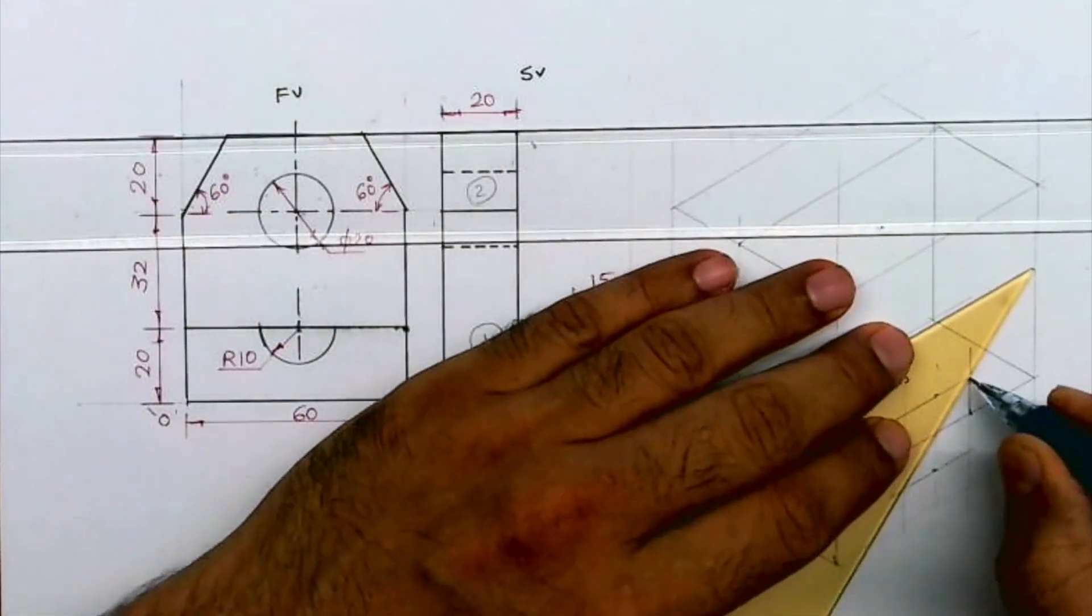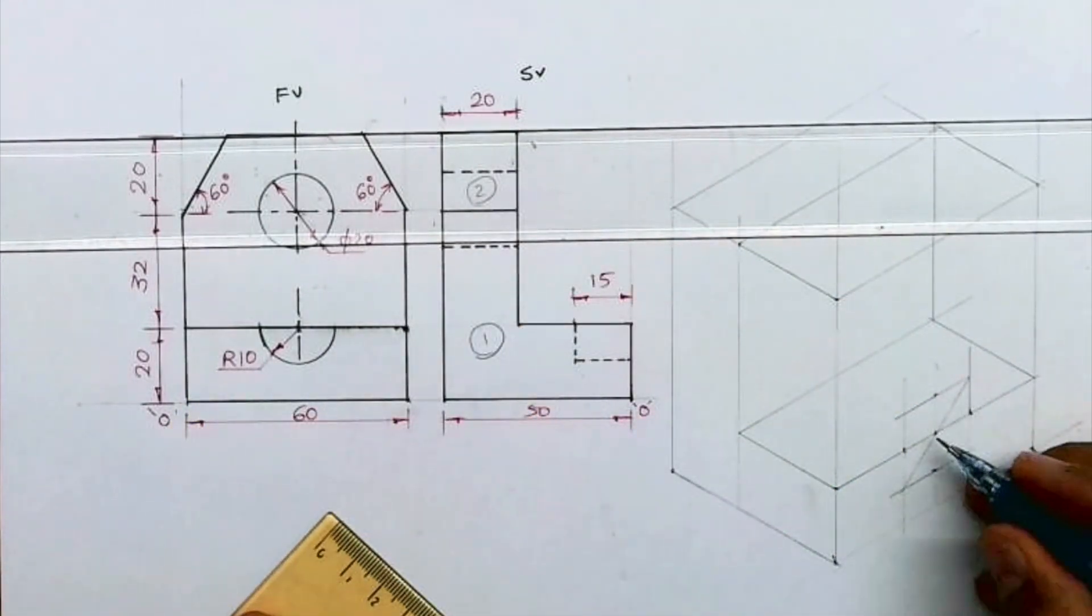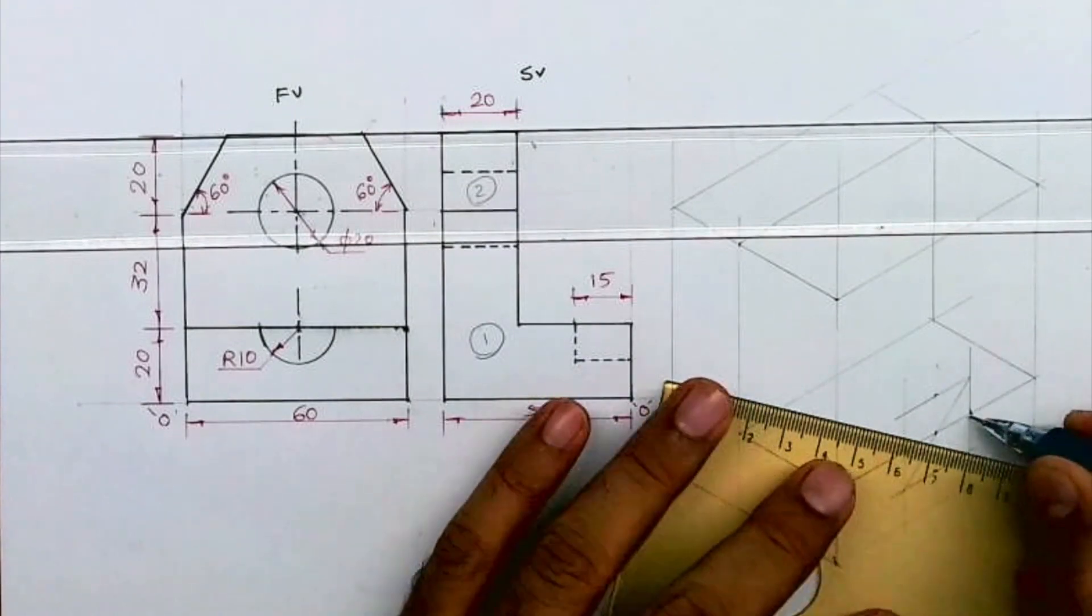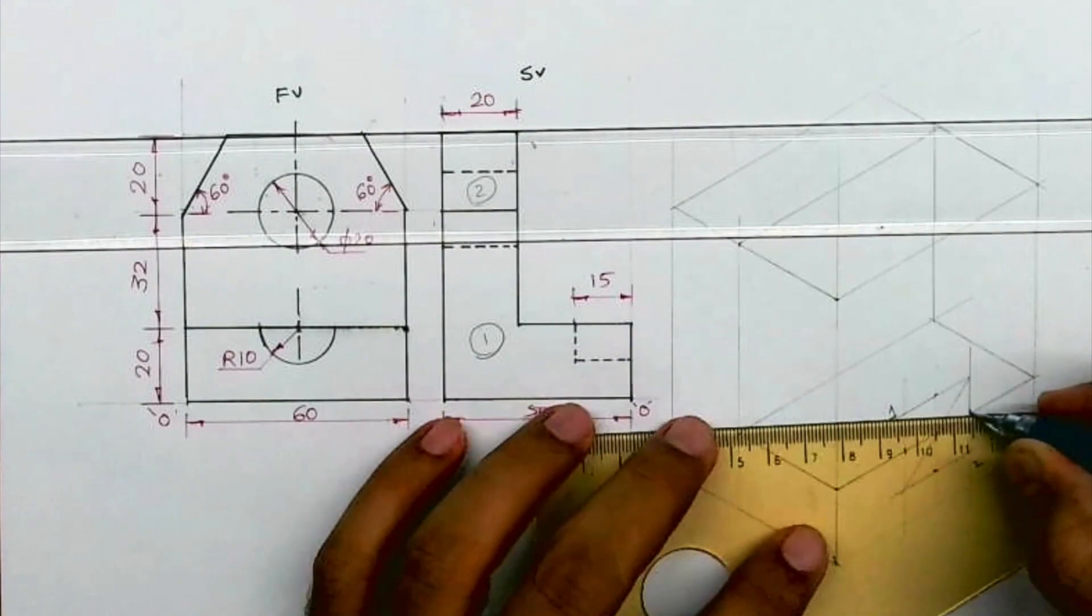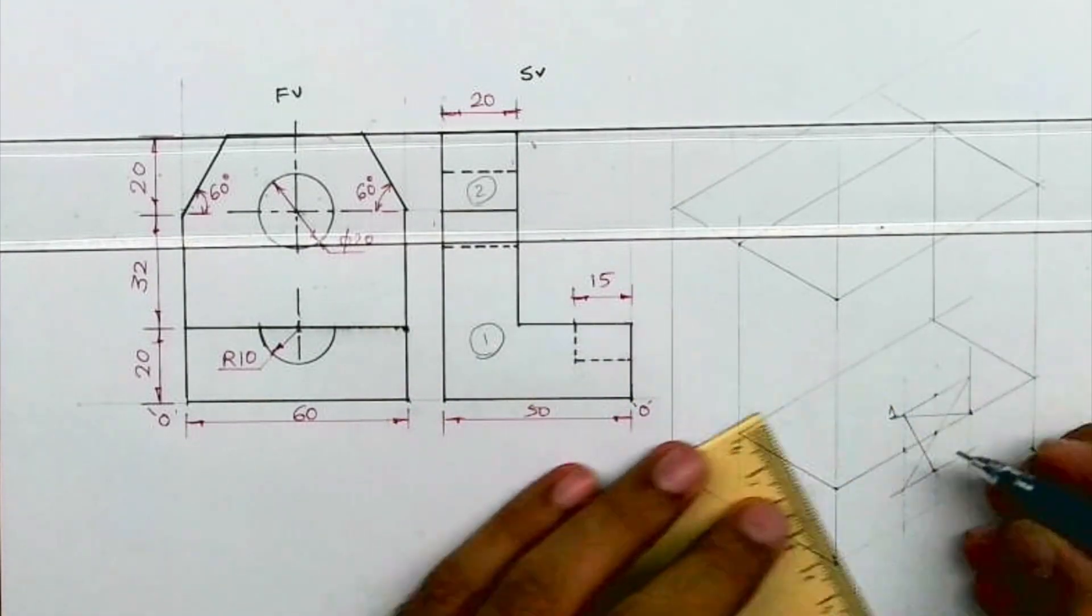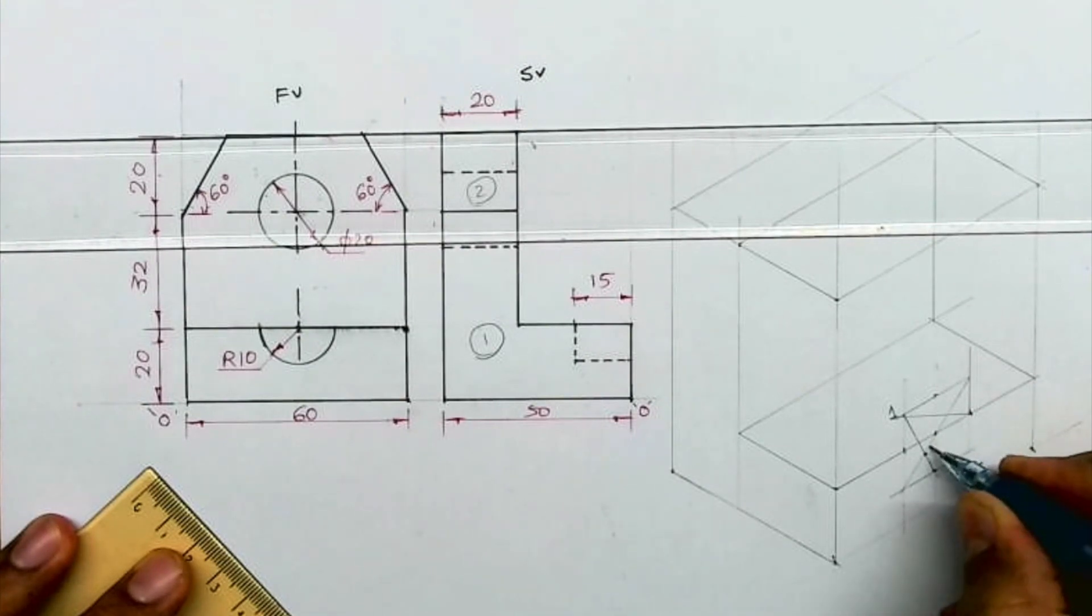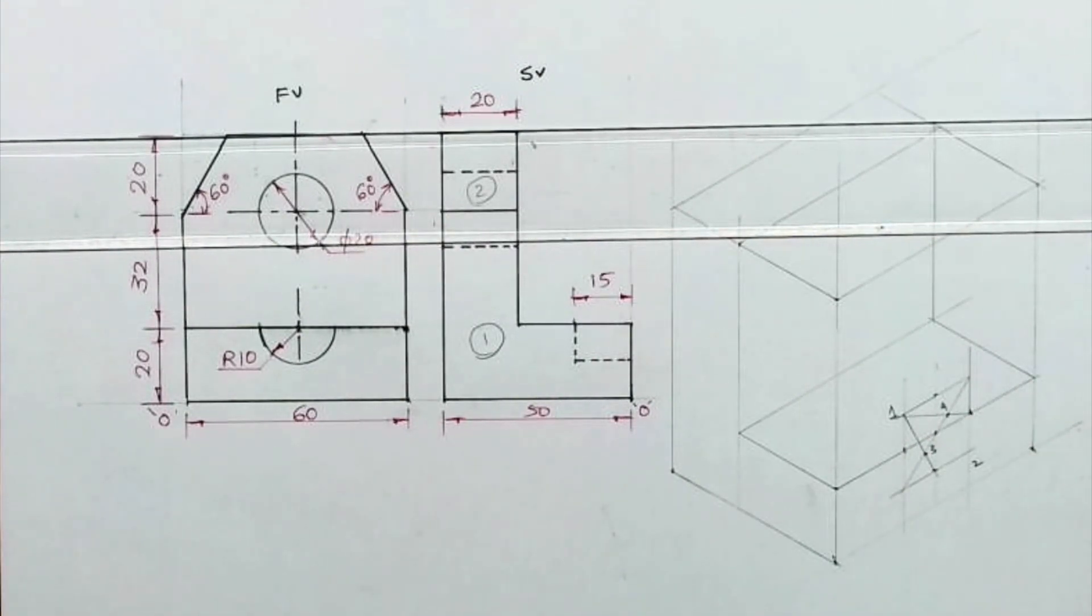Then you draw longest diagonal. Let's say this point is one, this is two, then I'll join one to m opposite midpoint. This is three and four.